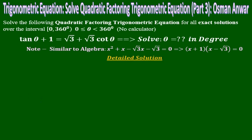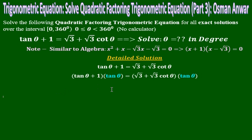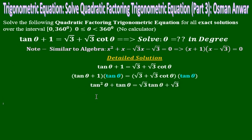The equation is tan θ + 1 = √3 + √3·cot θ. Multiply both sides by tan θ, because we have a mix of tan and cot. Tan times tan gives tan²θ; 1 times tan gives tan θ; √3 times tan θ gives √3·tan θ; and √3·cot θ times tan θ — since cot times tan equals 1 — gives just √3.